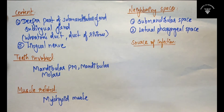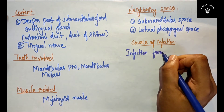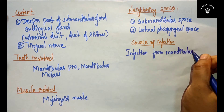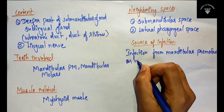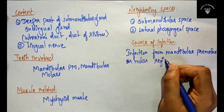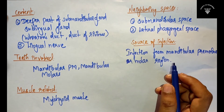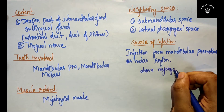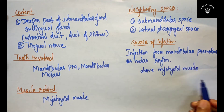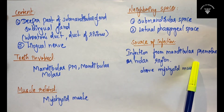Now moving on to the source of infection. The source of infection may be from the mandibular premolar or molar region, where the infected root apex is above the mylohyoid muscle — this is what causes the sublingual space infection.